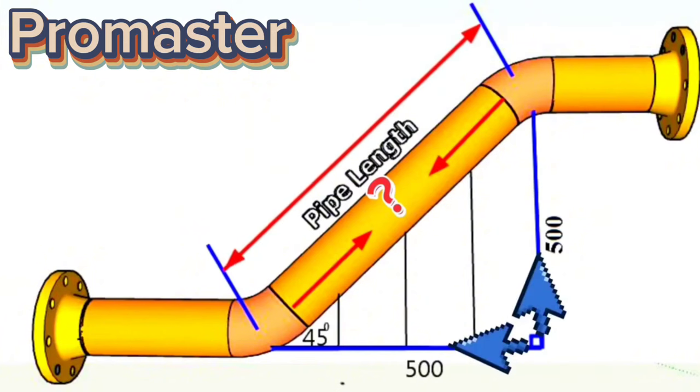Let's complete these crossed lines into a triangle. For this, we move this red line, which shows the distance between the elbows, parallel to the bottom, and connect the dashed lines to form a triangle.